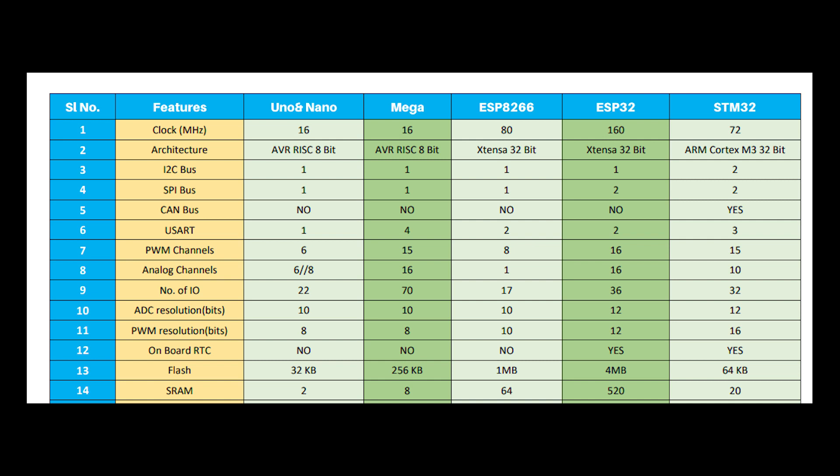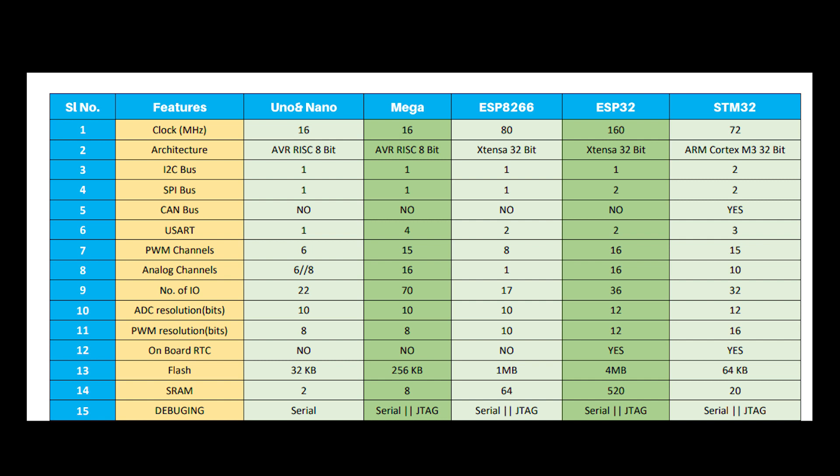While working with microcontrollers we often have to debug problems. Arduino Uno and Nano use only serial debugging, while the rest of the microcontroller boards in this comparison support both serial and JTAG debugging.